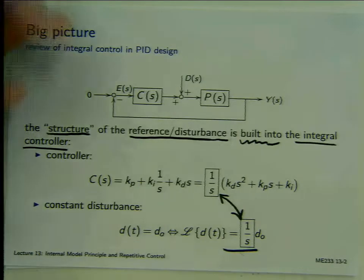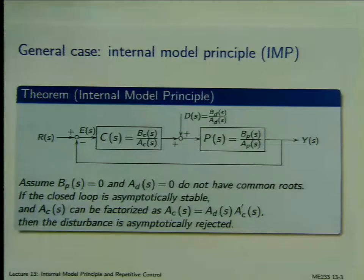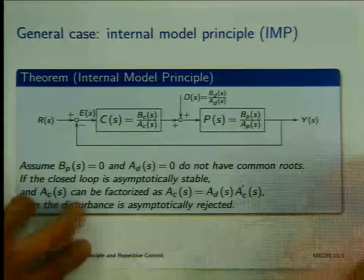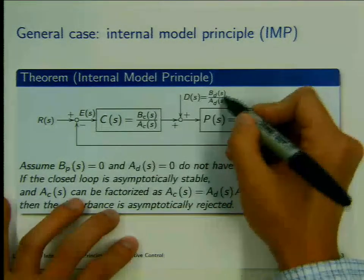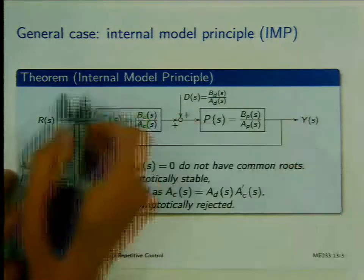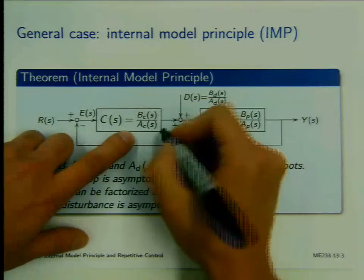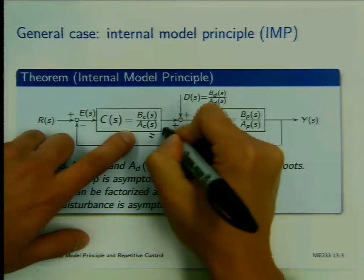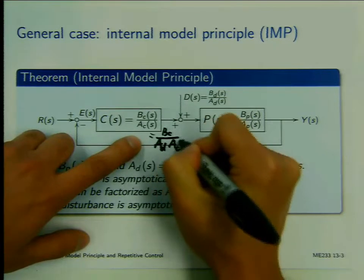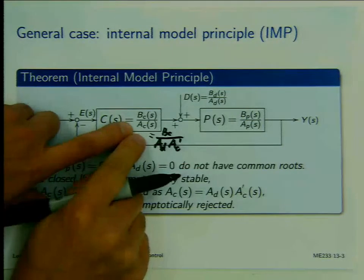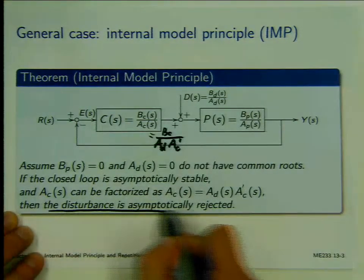This is a very basic example of the internal model principle. The result carries over not only when the disturbance is a constant, but when the disturbance has a general structure — say, the Laplace transform of the disturbance is B_D(s) divided by A_D(s). The internal model principle says: if the controller contains the structure of the disturbance, i.e., A_C can be decomposed to include A_D inside, then the disturbance will be asymptotically rejected.